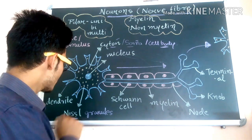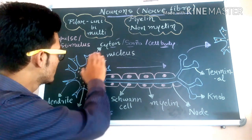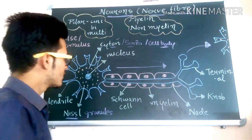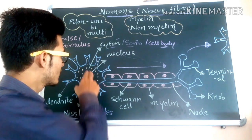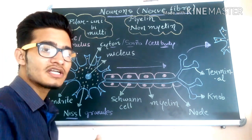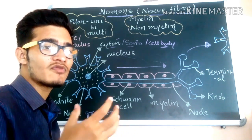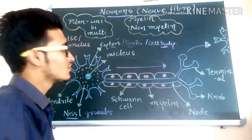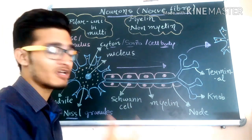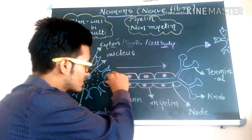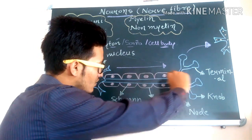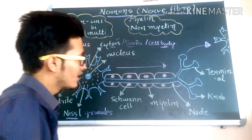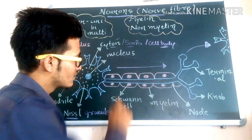So after Nissl granules and dendrites we have discussed cytone. Now, the central portion which coordinates different functions of this particular nerve fiber is known as the nucleus. This long, thin, and delicate structure is known as the axon.